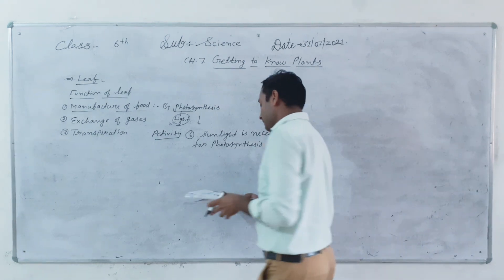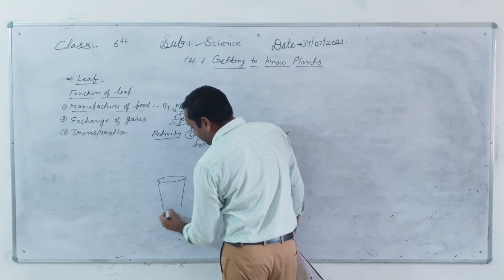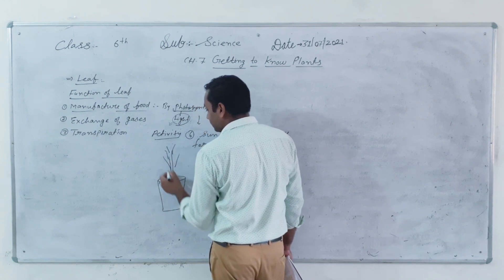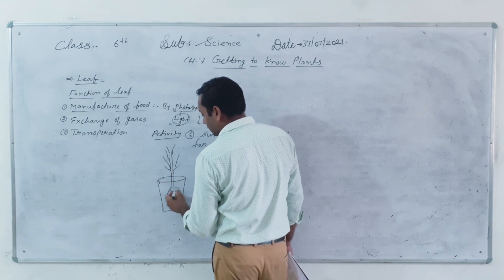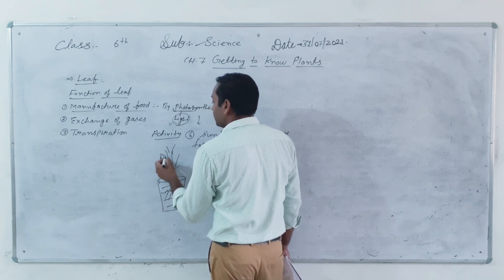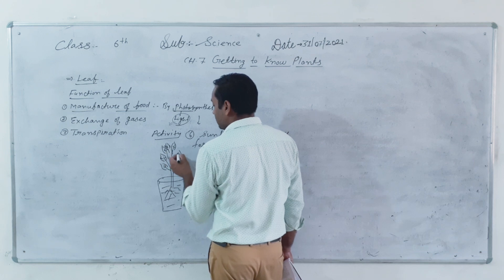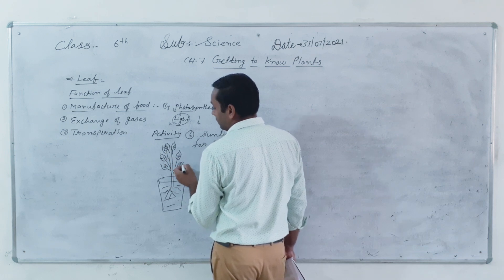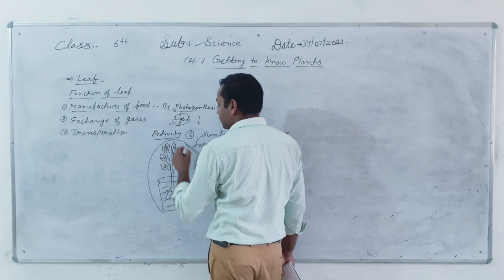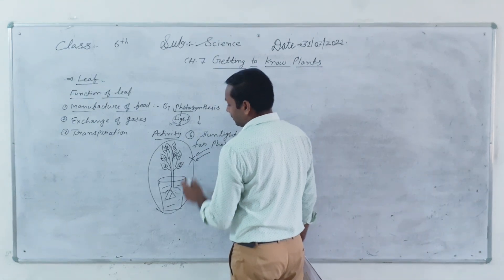We are doing an activity with a potted plant. We keep the potted plant in a dark room where sunlight does not exist, for three to four days. Then we cover the leaf with a black cover so that light does not reach it.